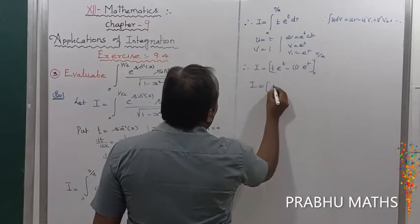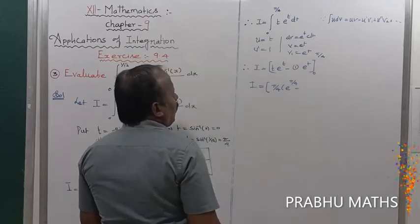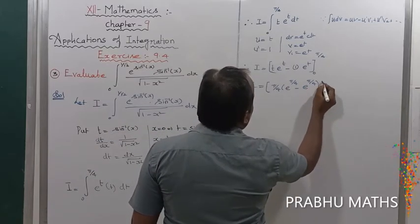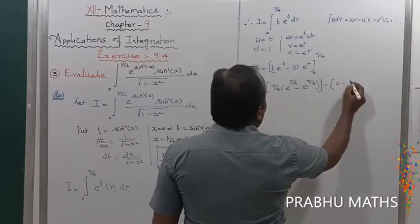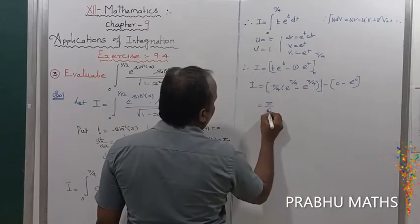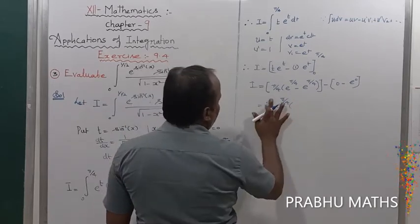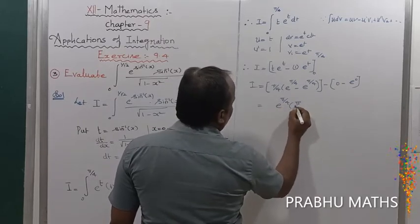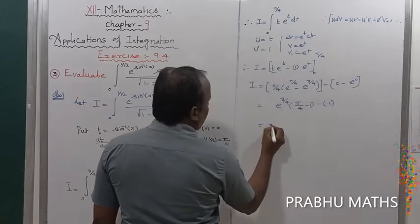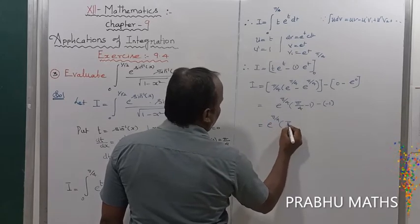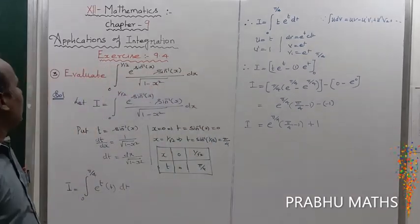Therefore I equals t into e to the power t minus 1 into e to the power t, evaluated from 0 to pi by 4. Substituting limits: at upper limit, pi by 4 into e to the power pi by 4 minus e to the power pi by 4; at lower limit, the first term gives 0 and the second gives minus e to the power 0 equals minus 1. Taking e to the power pi by 4 as common, I equals e to the power pi by 4 into (pi by 4 minus 1) plus 1. That is the solution of the third sum.